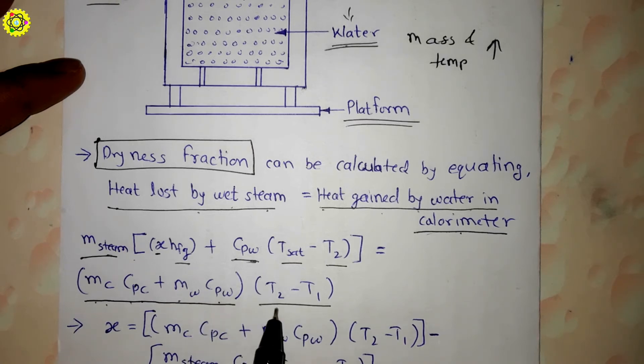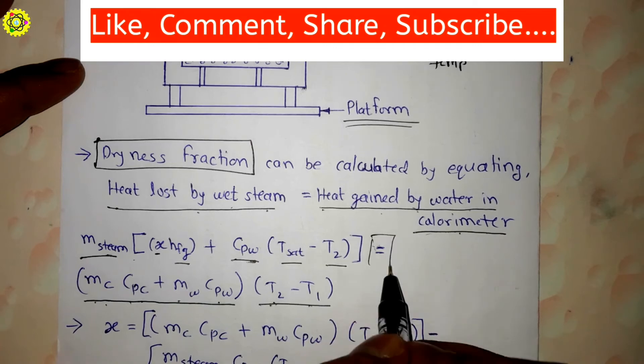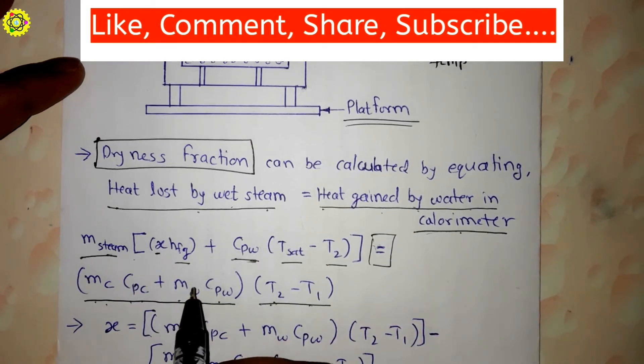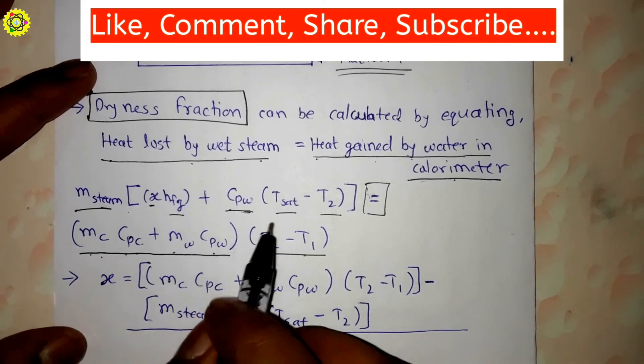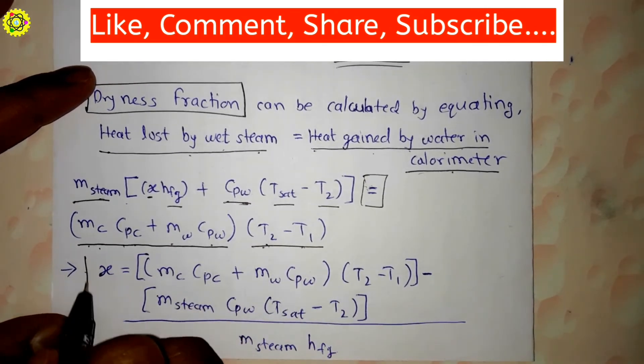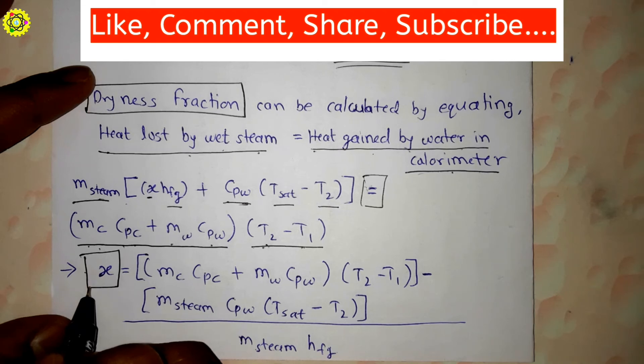m_w is the mass of water filled in calorimeter and c_pw is the specific heat of water. Here T_2 is the final temperature and T_1 is the initial temperature of water. Now as you can see here, we have equalized these two formulas.